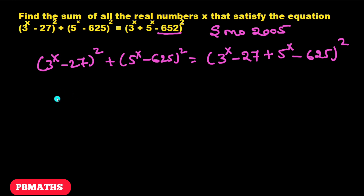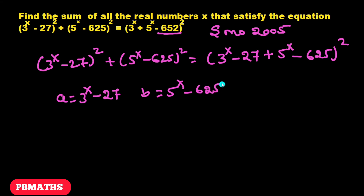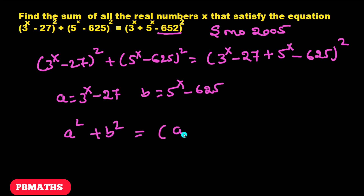Now let's consider a = 3^x − 27 and b = 5^x − 625. Replacing in the equation, we have a² + b² = (a + b)².